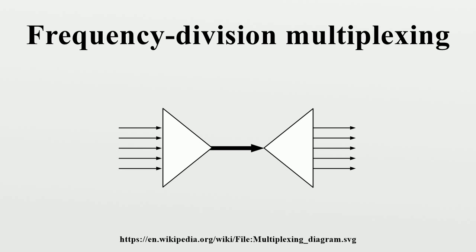At the source end, for each frequency channel, an electronic oscillator generates a carrier signal, a steady oscillating waveform at a single frequency that serves to carry information. The carrier is much higher in frequency than the baseband signal.